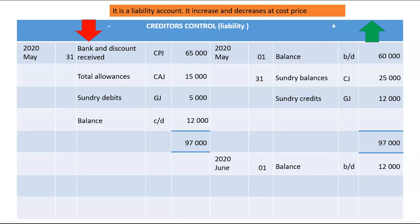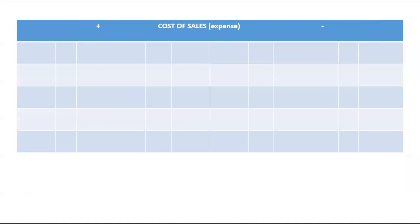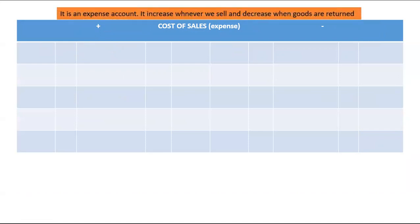The last financial position General Ledger account to discuss is Cost of Sales. This is an expense account — a valuation account prepared because of the matching principle. We're trying to match our income or revenue from sales with the cost price of those goods so we can determine what we call gross profit.